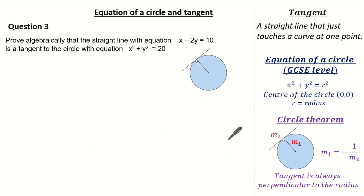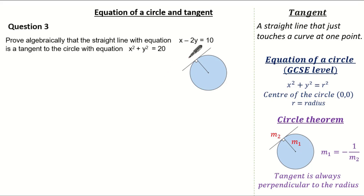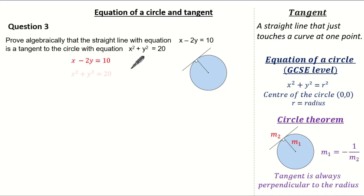Let's look at our last exam question involving equations of a circle and tangents. The question wants us to prove algebraically that the straight line with equation x minus 2y equals 10 is a tangent to the circle with equation x squared plus y squared equals 20. Proving that a line is a tangent means the circle meets the line at exactly one point. Knowing this, we can form simultaneous equations — rearranging the line equation to make x the subject.